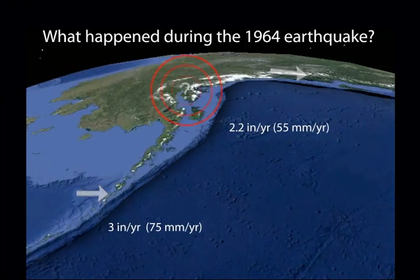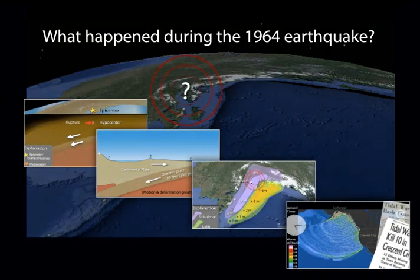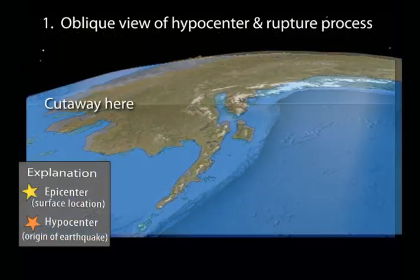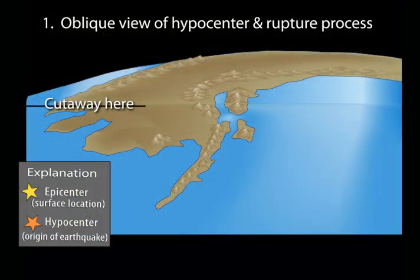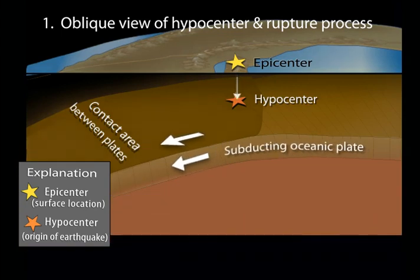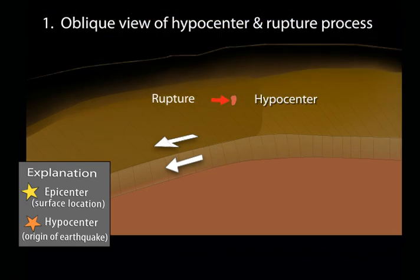We will animate the 1964 earthquake in four consecutive perspectives to understand what happened. Most people think of an earthquake as a sudden release of energy at the epicenter. In reality, an earthquake is caused by sudden displacement of rock across a fault at a given depth within the Earth at the hypocenter. For great earthquakes, the displacement at the hypocenter is just the beginning.